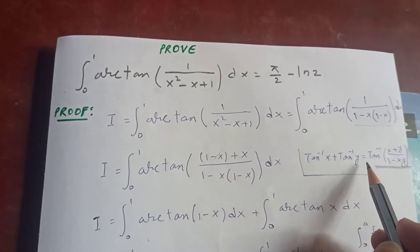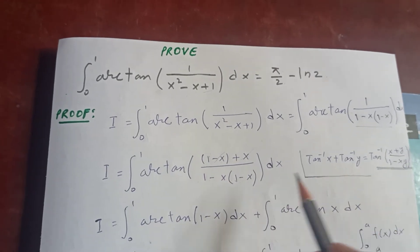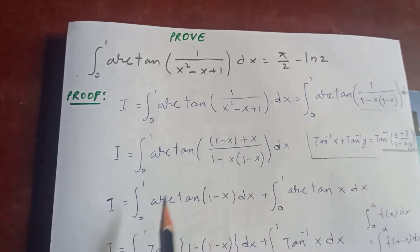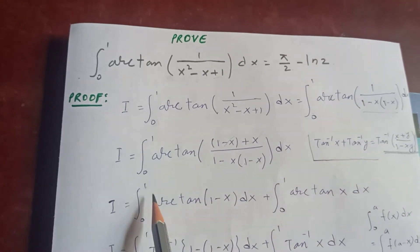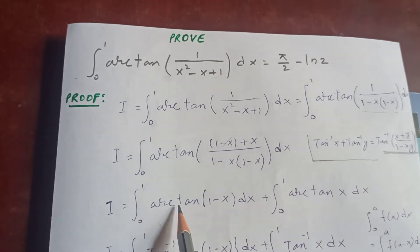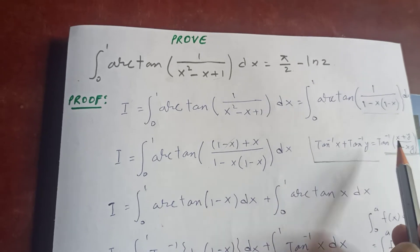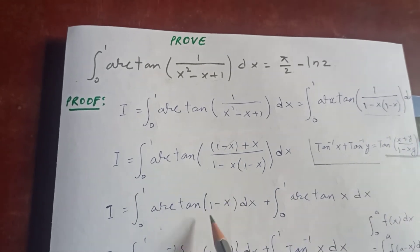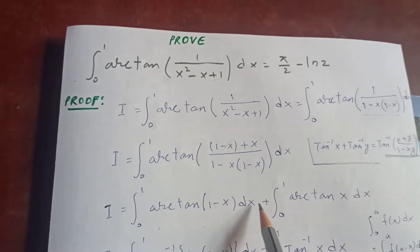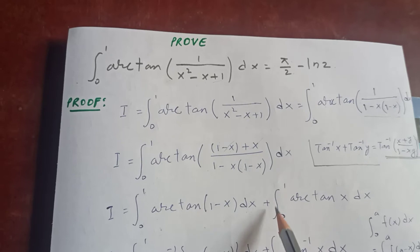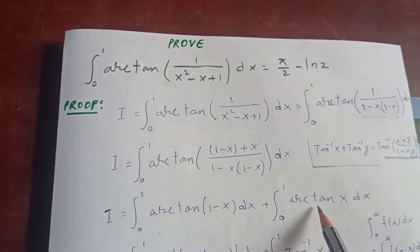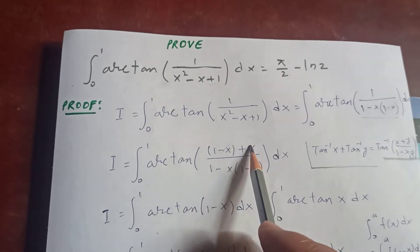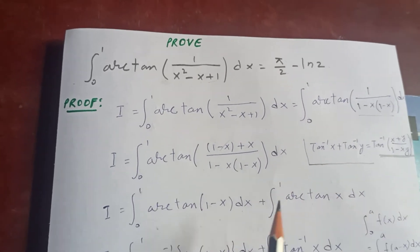Therefore we split the integral using the arctan addition formula. It becomes: I equals the integral from 0 to 1 of arctan of (1 minus x), dx, plus the integral from 0 to 1 of arctan of x, dx.